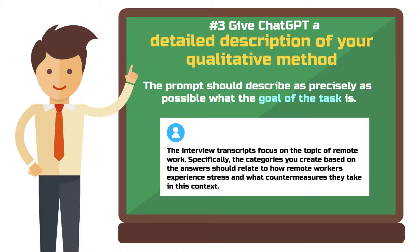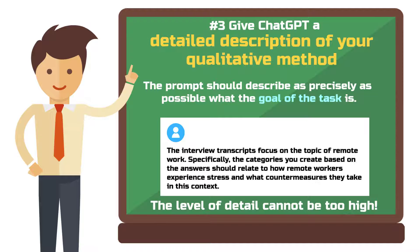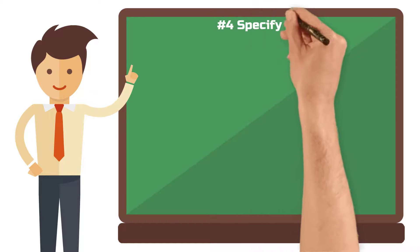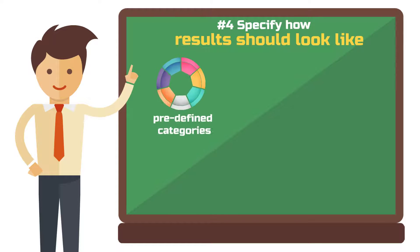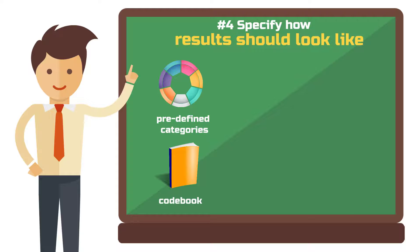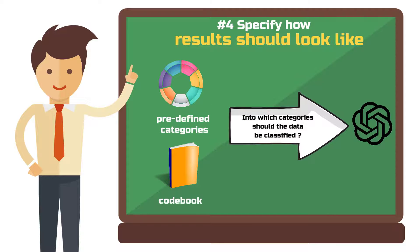The level of detail here cannot be too high — it's important not to rush and to take your time when composing the prompt. Step 4: Specify how results should look. If you're working with predefined categories or a codebook, now is the time to explain to ChatGPT into which categories the data should be classified. You can also include a complete codebook if you like.